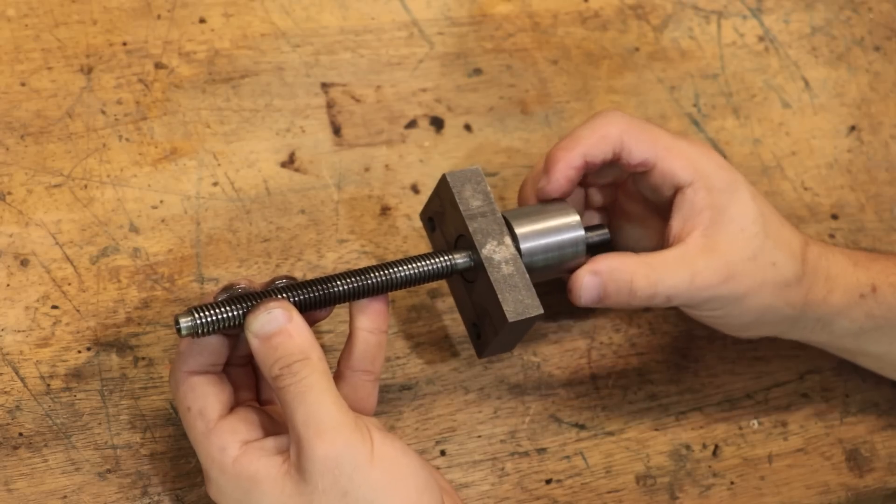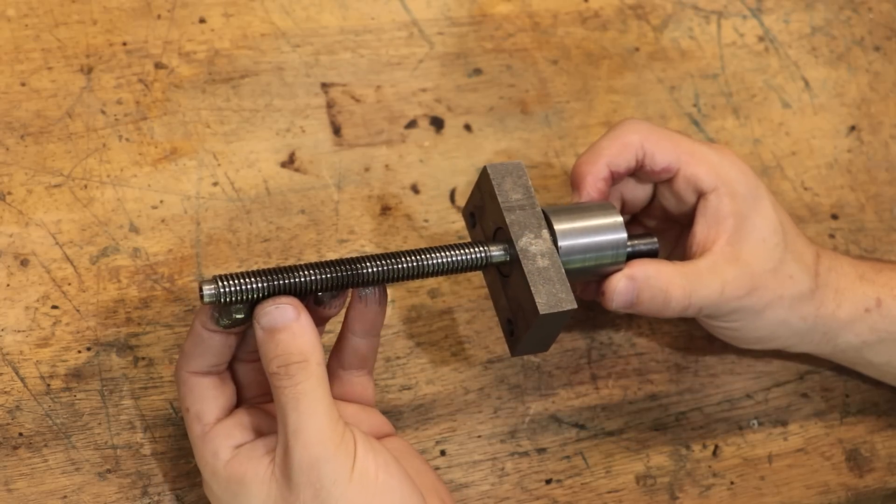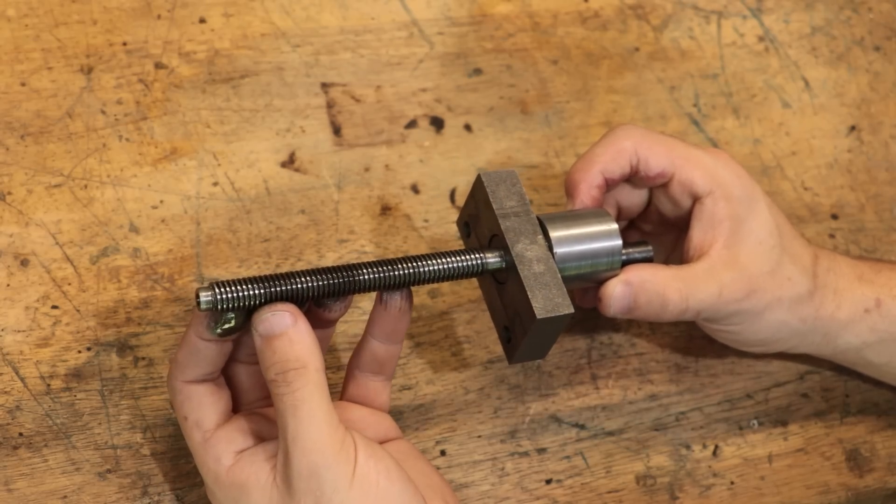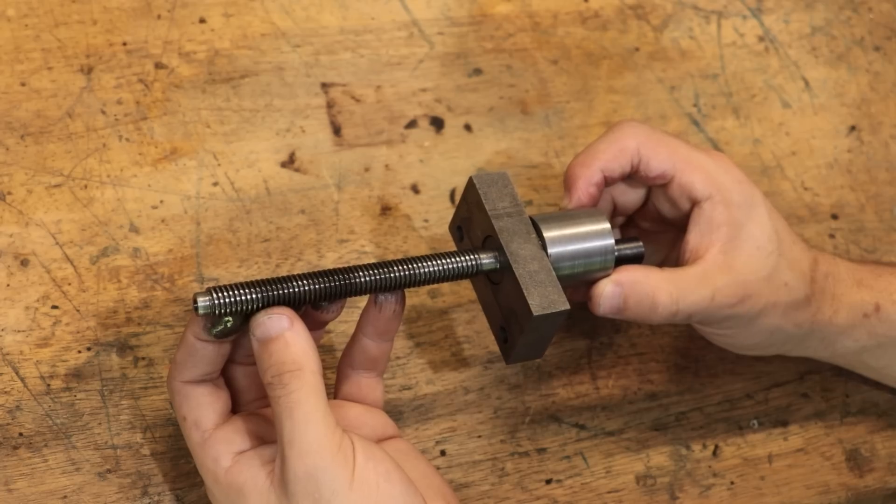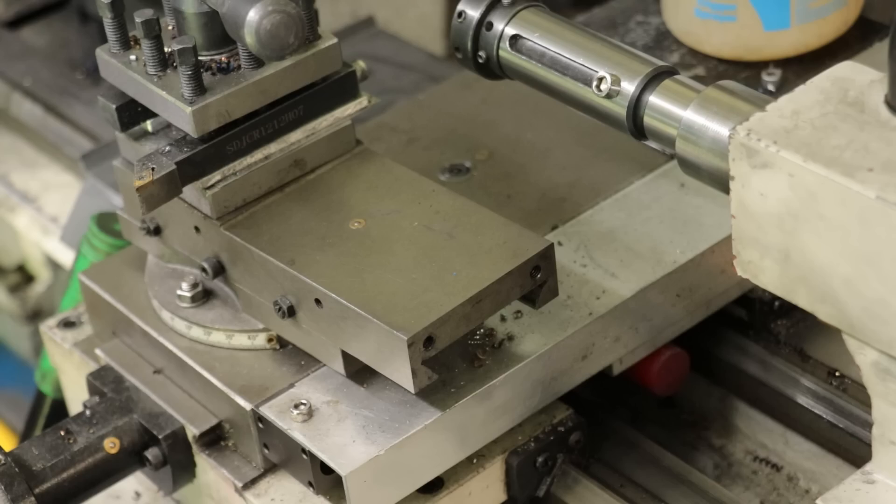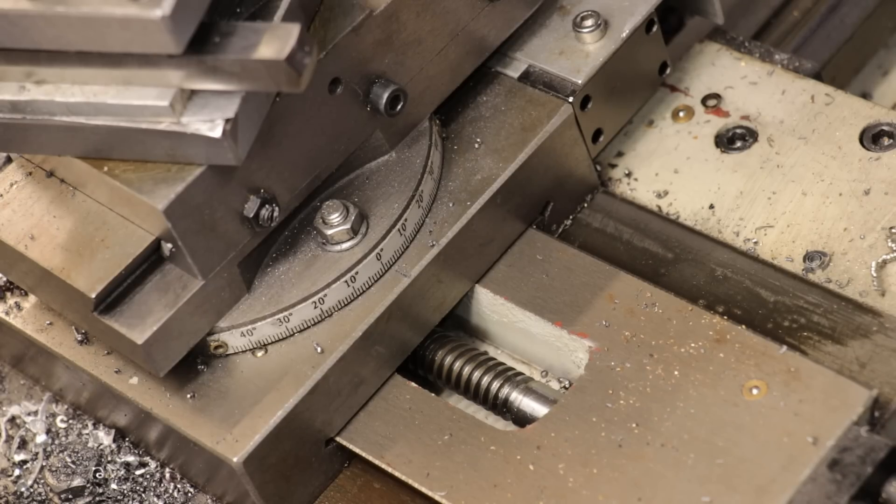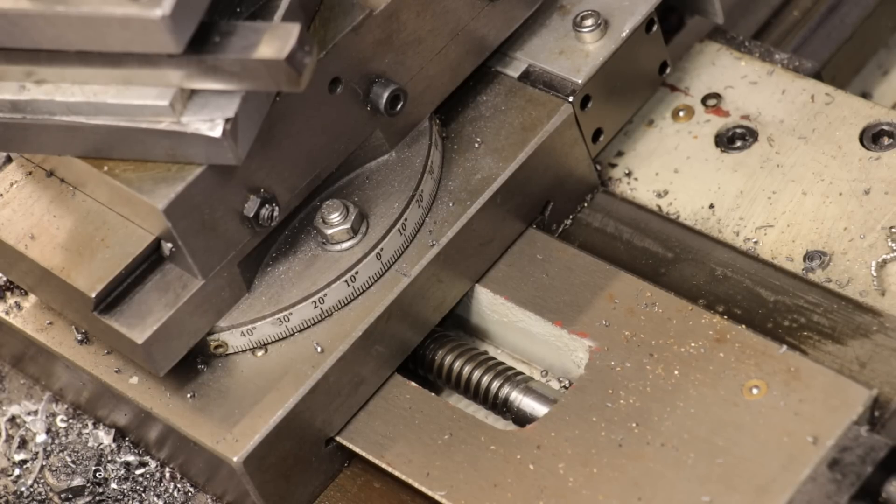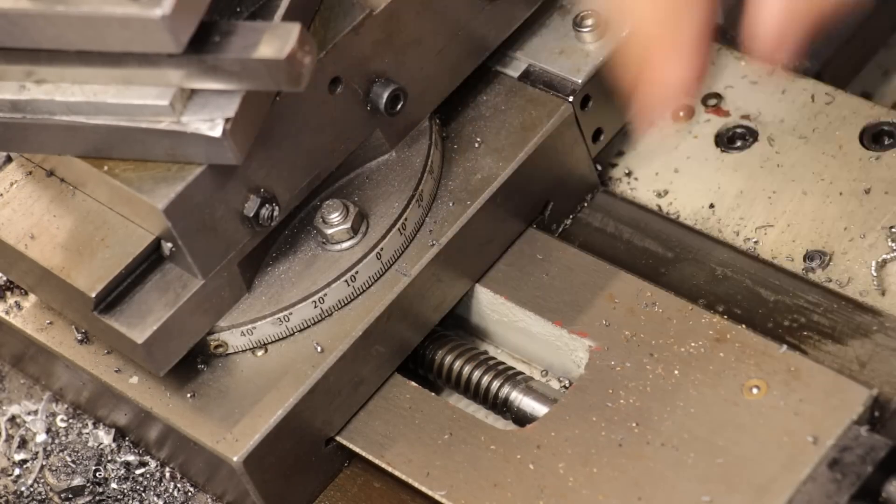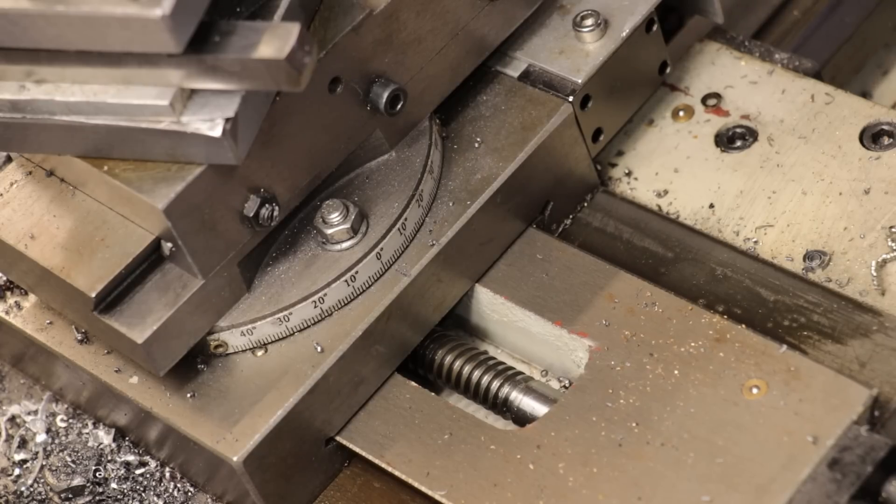I can definitely imagine that chattering like crazy. So instead, I'm going to take the other route, and that's just going to be to make a tap. Well, technically, I'm going to need two. One for the top slide, and one for the cross slide. They're going to be very similar, except the cross slide uses a reverse, or a left-handed thread, and the top slide does not. It uses a normal, you know, right-hand thread.